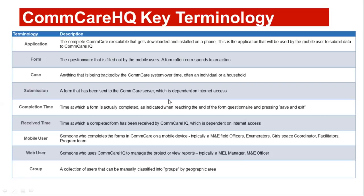A 'web user' is someone who uses CommCare HQ to manage or view a project. A 'group' is a collection of users that can be manually classified into groups by geographic area. These are the key terminologies you need to understand so that as we proceed you will have better comprehension of how the platform is used.